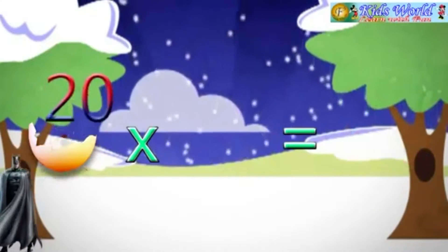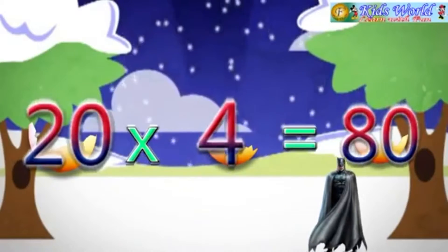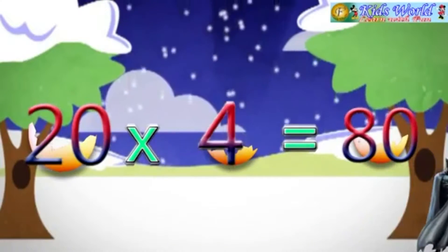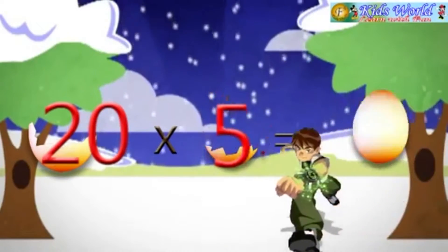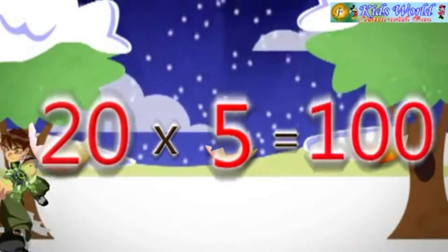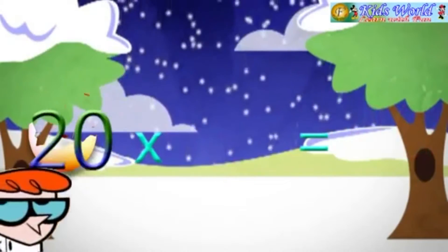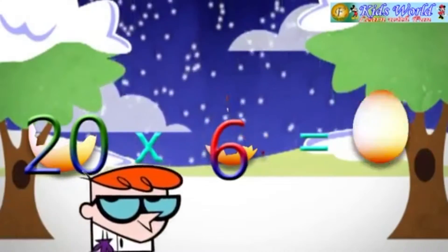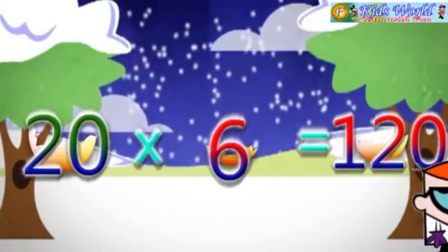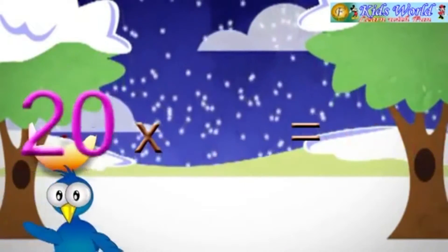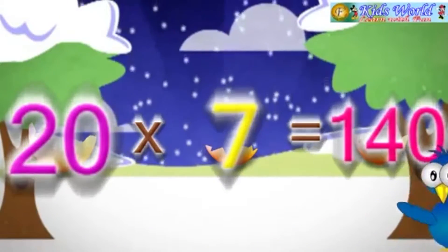20 into 4 is equal to 80. 20 into 5 is equal to 100. 20 into 6 is equal to 120. 20 into 7 is equal to 140.